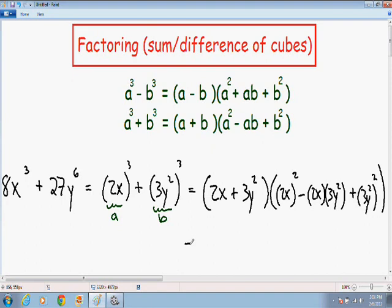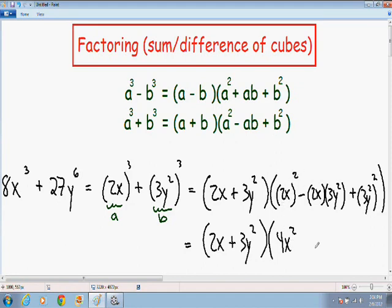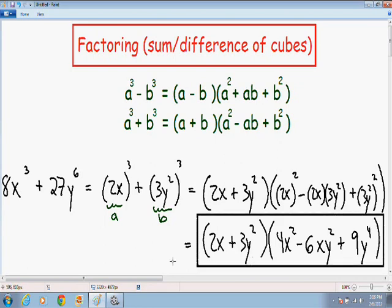Now we simplify. The first factor (2x plus 3y squared) stays the same. (2x) squared gives us 4x squared. 2x times 3y squared: multiply the constants — 2 times 3 is 6 — and x times y squared is xy squared, giving us 6xy squared. Then (3y squared) squared: 3 squared is 9, and y squared squared multiplies the exponents to give y to the fourth. So the final answer is (2x plus 3y squared)(4x squared minus 6xy squared plus 9y to the fourth).